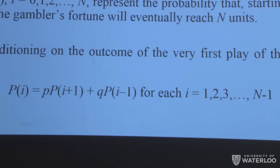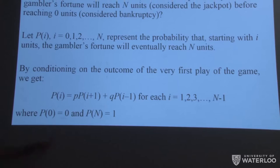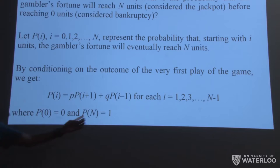And this holds true for every intermediate value of i ranging from 1 up to N minus 1. Now, I've purposely excluded the two boundary cases, which are zero and capital N, because those are easy to handle. Obviously, if you start off with nothing, then the probability that you end up with the entire jackpot is zero. Conversely, if we start with the entire jackpot, why are we going to bother playing anymore? The probability of winning the entire jackpot is one. So those are our two boundary conditions.